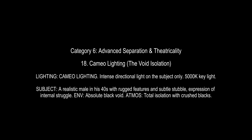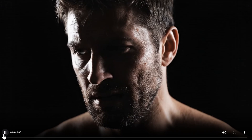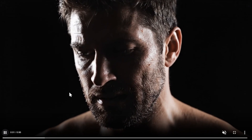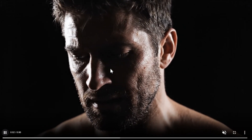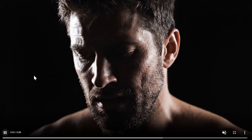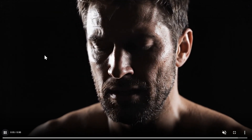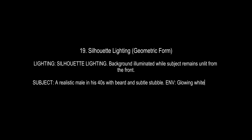Category 6 is advanced separation. First, cameo lightning or void isolation — it lights the subject intensely while keeping the background in total crushed blackness. You can see his face is illuminated while the background is completely black. Something kind of opposite is silhouette lightning or geometric form, which lights only the background leaving the subject as a pitch-black shape — a pretty interesting way of manipulating lighting in AI.